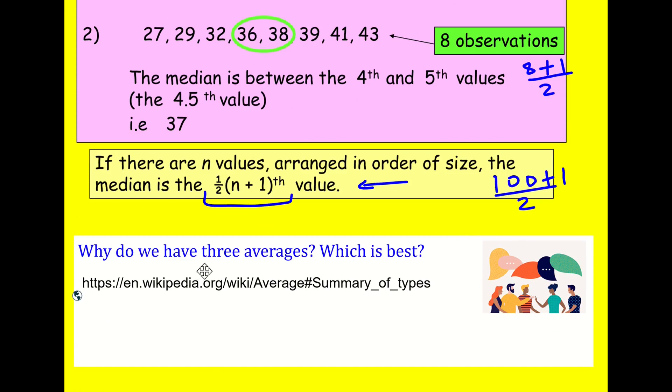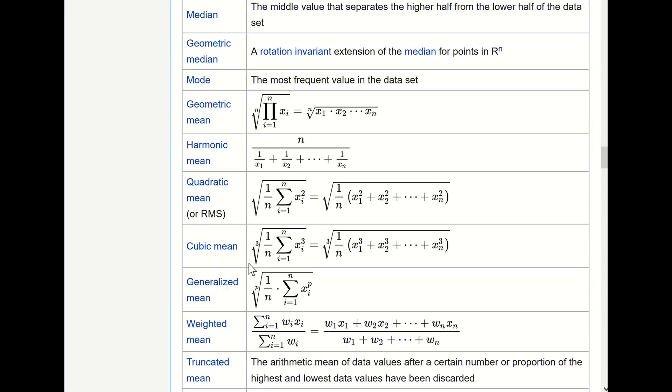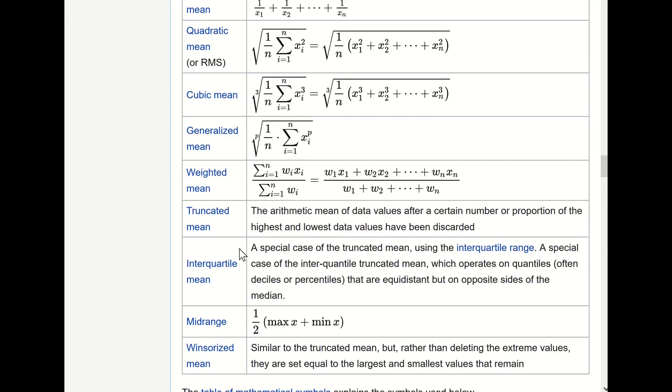Well, my first answer is that actually, we don't have three averages. We have loads more than that. And if you look on Wikipedia, here, here are some of them. What we call the mean, adding them up and dividing by how many there are, is sometimes called the arithmetic mean. And here's some notation we're going to look at. Don't stress about this at the moment. We'll get onto that. We've got the median, but there's also something called the geometric median. We've got our mode. There's also something called the geometric mean. That's actually when you times them all together. And if you have n values, you then take the nth root. There's all these other ones as well.